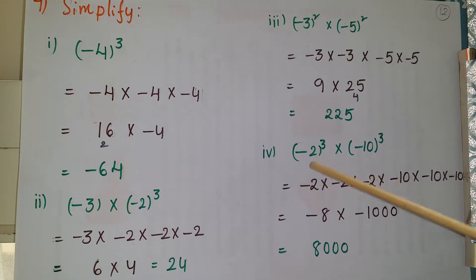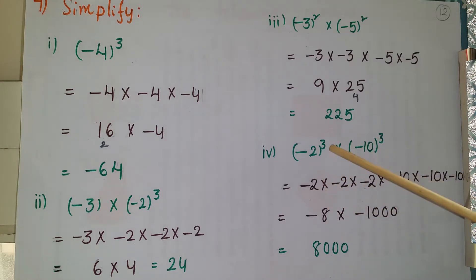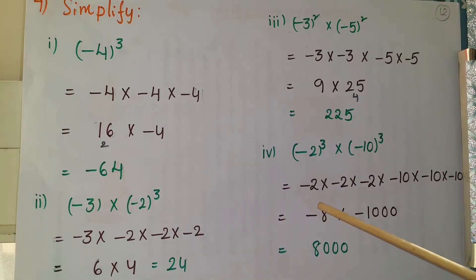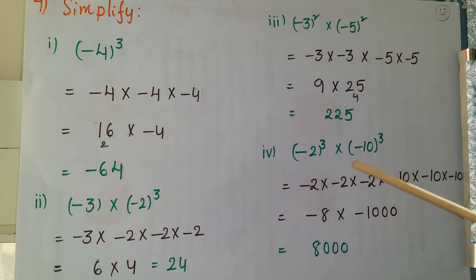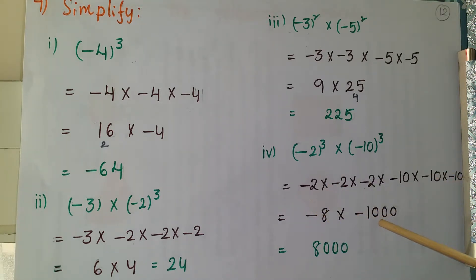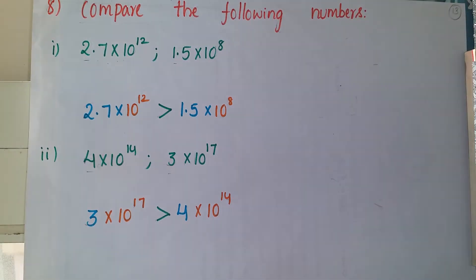Next one: (-2)³ into (-10)³. Minus 2 into minus 2 into minus 2 — three times. For (-10)³: minus 10 into minus 10 into minus 10. First, minus 2 into minus 2 is plus 4, and 4 into minus 2 is minus 8. Then minus 10 into minus 10 is plus 100, and 100 into minus 10 is minus 1000. So minus 8 into minus 1000: minus into minus is plus, giving 8 into 1000 = 8000.